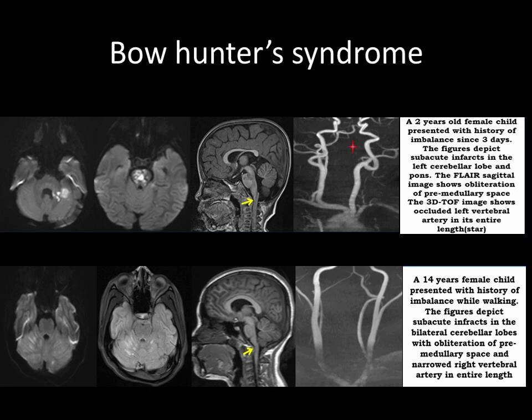Another case of a 14-year-old female child who presented with a history of imbalance while walking. These figures depict subacute infarcts in bilateral cerebellar lobes with obliteration of premedullary space and a narrowed right vertebral artery in its entire length, depicted in the 3D TOF image.